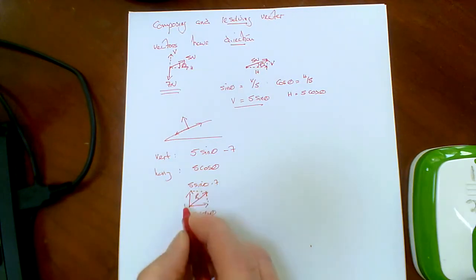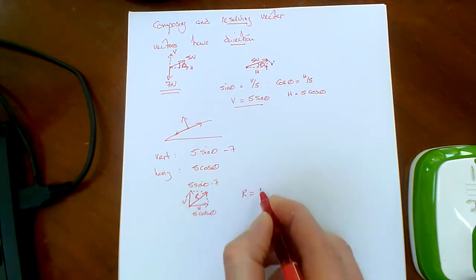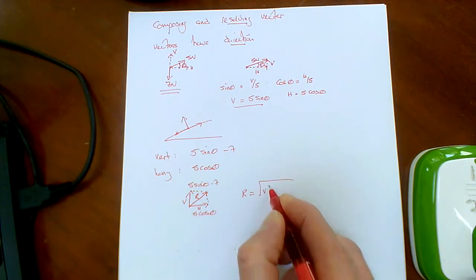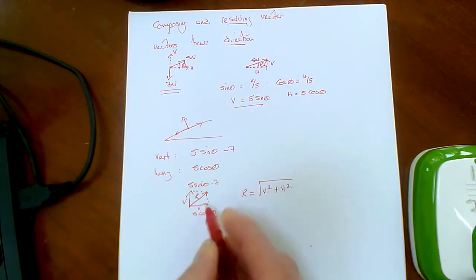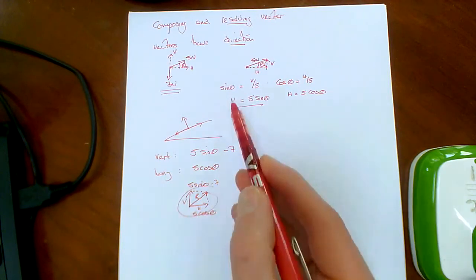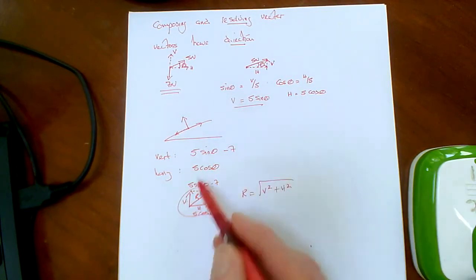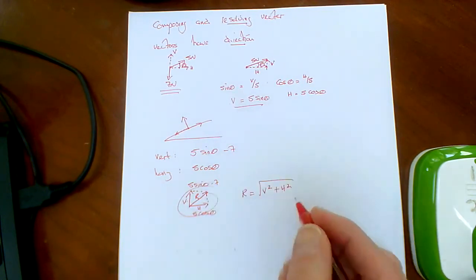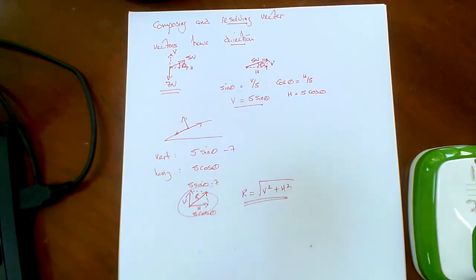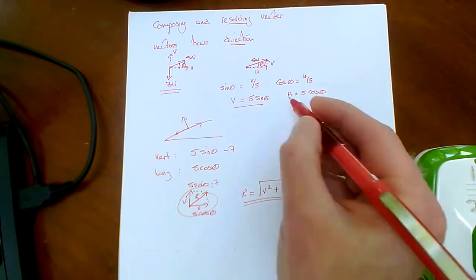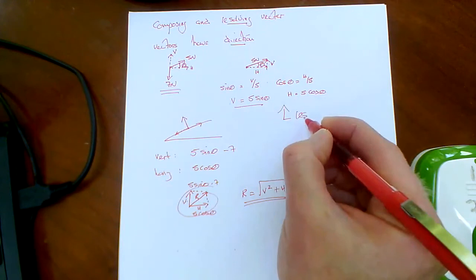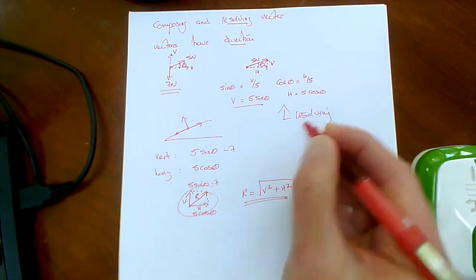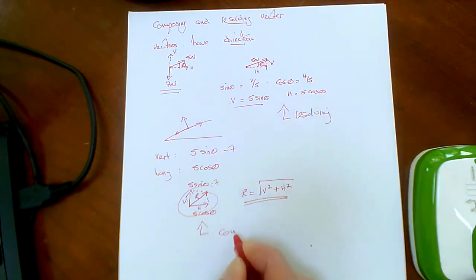And if I just say that's V and that's H, R of course is the square root of V squared plus H squared in this case. Clearly this V and this V, this H, well this V and this V are not the same. So this is the resolving bit. This is the composing bit.